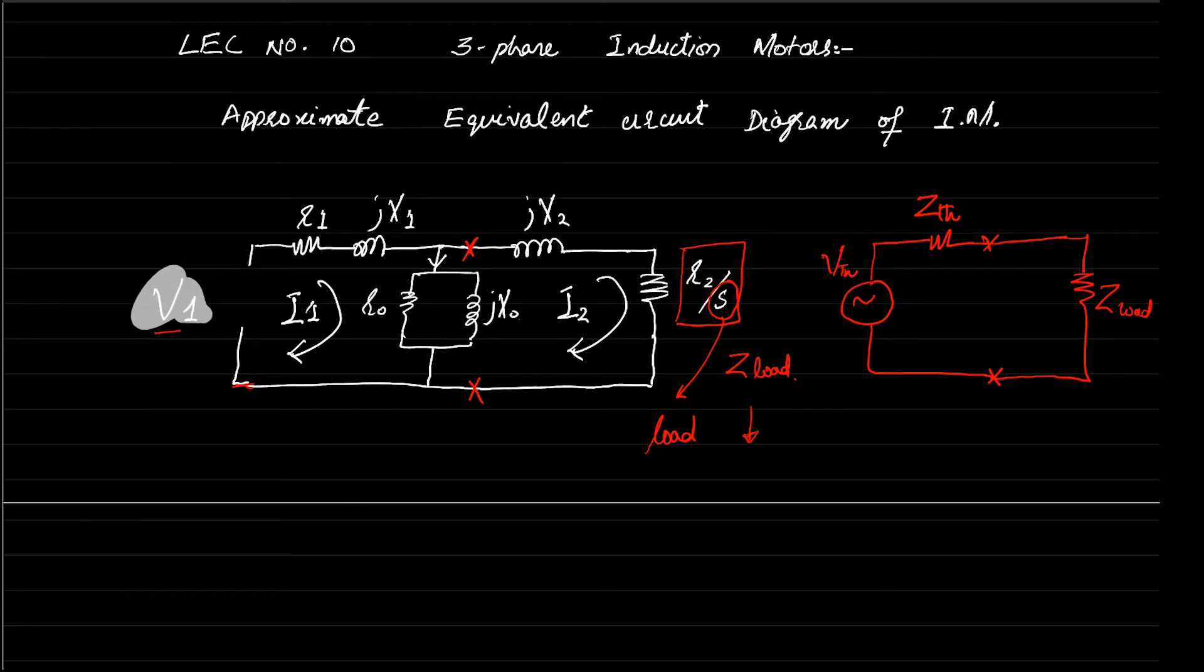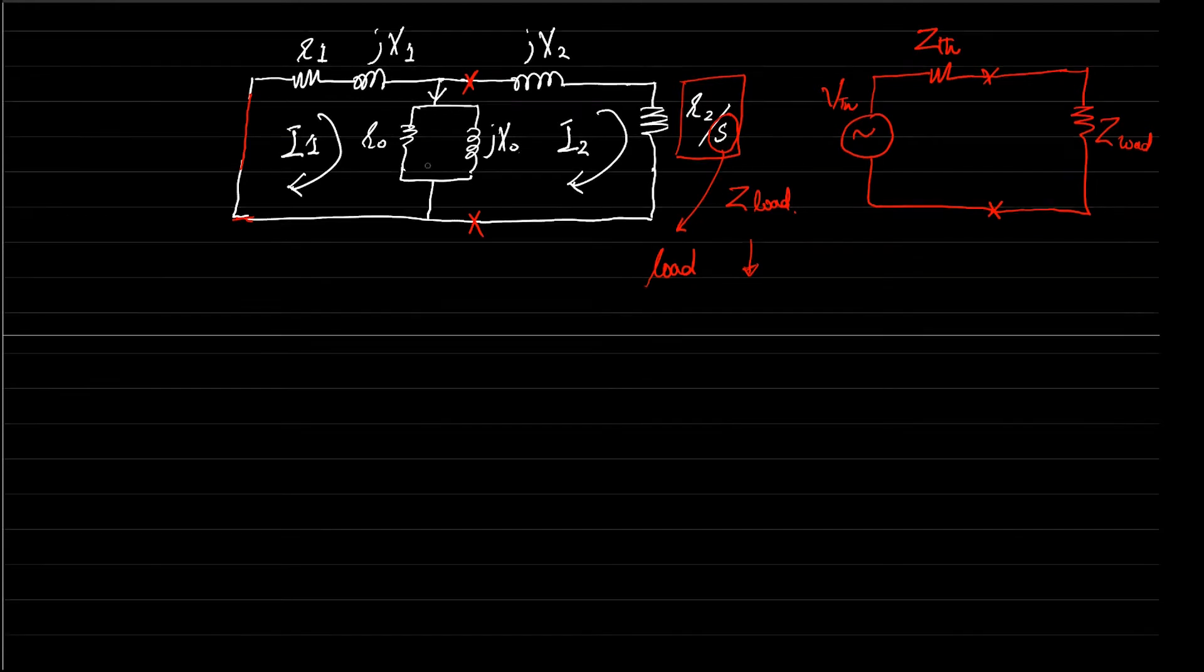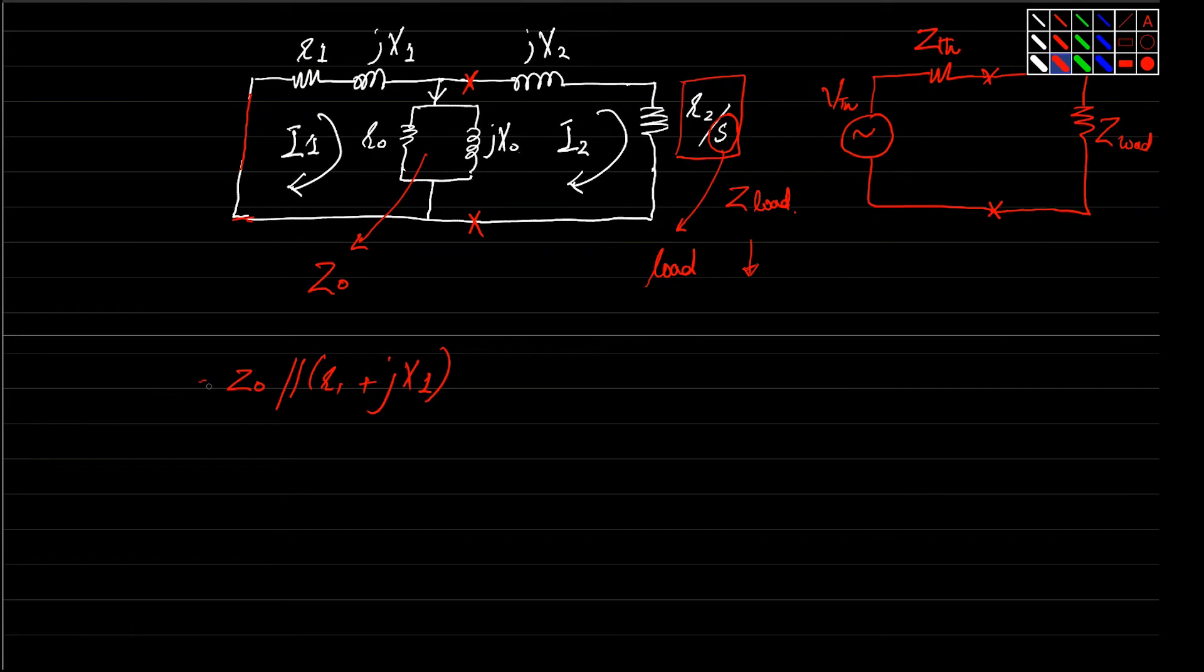We will short this voltage source, and then we have the Thevenin equivalent ZTh. To find out the voltage VTh across these two red crosses, we will put back our voltage source, presenting that as V1.